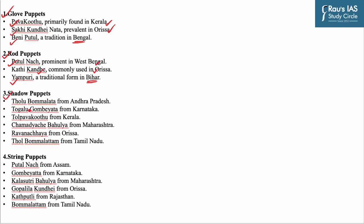The third type is shadow puppets. Examples are Tholubommalata from Andhra Pradesh, Togalu Gombeyatta from Karnataka, Tholpavakoothu from Kerala, Chamdya Bahulyache from Maharashtra, Ravana Chhaya from Odisha, and Tholbommalattam from Tamil Nadu. The last type is string puppets. Important examples are Putul Nautch from Assam, Gombeyatta from Karnataka, Kalsutri Bahulya from Maharashtra, Gopalila Kundhei from Odisha, Kathputli from Rajasthan, and Bommalattam from Tamil Nadu.